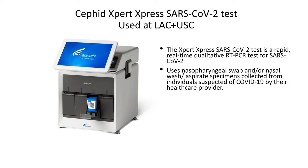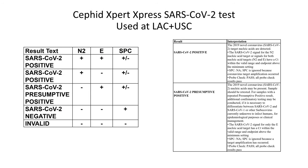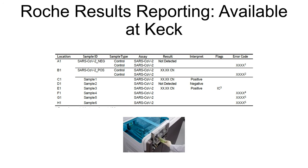The Roche machine is a rapid real-time qualitative assay strictly FDA approved for nasopharyngeal swabs, which need to be collected by a healthcare provider. The reports have an internal control, and in order for a sample to be considered positive, the control has to be positive. The Roche assay is more rapid, and its output reporting looks like what is shown on this slide.